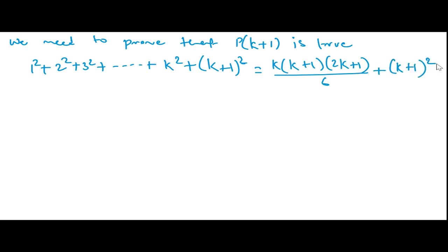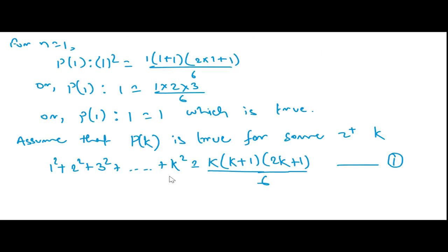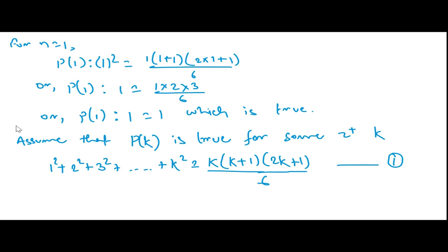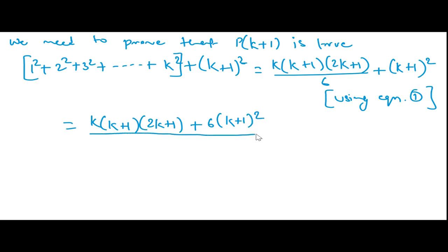Using equation 1, we substitute and get: k(k+1)(2k+1)/6 + (k+1)². Taking common denominator 6: [k(k+1)(2k+1) + 6(k+1)²]/6. Now expanding: numerator becomes (k+1)[k(2k+1) + 6(k+1)] = (k+1)[2k² + k + 6k + 6] = (k+1)[2k² + 7k + 6].